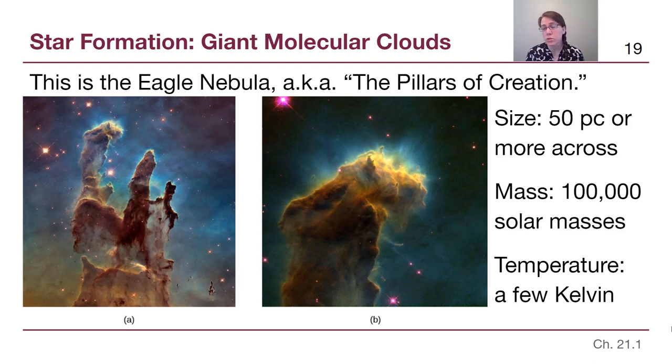This is also known as the Pillars of Creation, because what we are looking at, and this is enhanced color, this is not all colors that our eyes would be able to see, it also includes infrared and ultraviolet, but it is showing us real structure here. On the left we have the overall large picture of the Eagle Nebula, and you kind of have to turn your head to see what looks like an eagle with its wings out, holding maybe a salmon that it's caught in its talons.